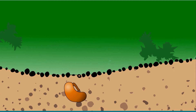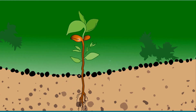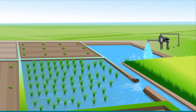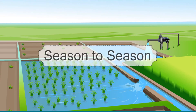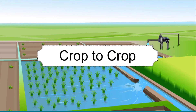Irrigation. Water is one of the most important requirements for agriculture. It is essential for the proper growth and development of flowers, fruits, and seeds. The plants absorb water, minerals, and fertilizers dissolved in it through roots. The process of supplying water to the crops at different intervals is known as irrigation. The time and frequency of irrigation varies from season to season, soil to soil, and crop to crop.